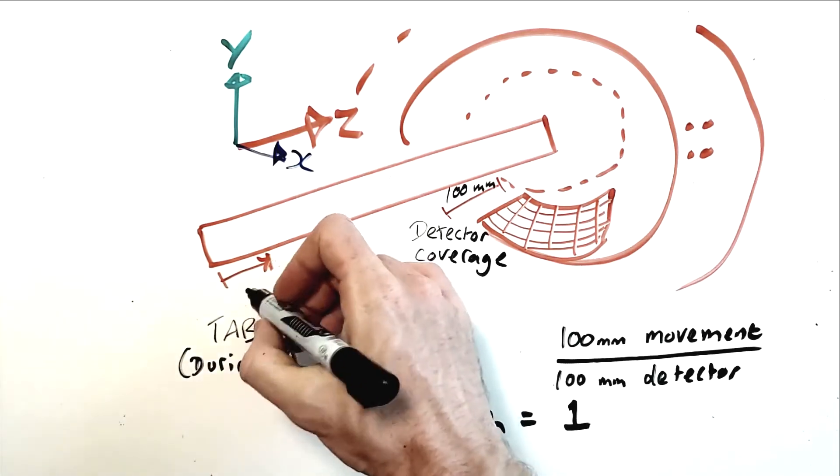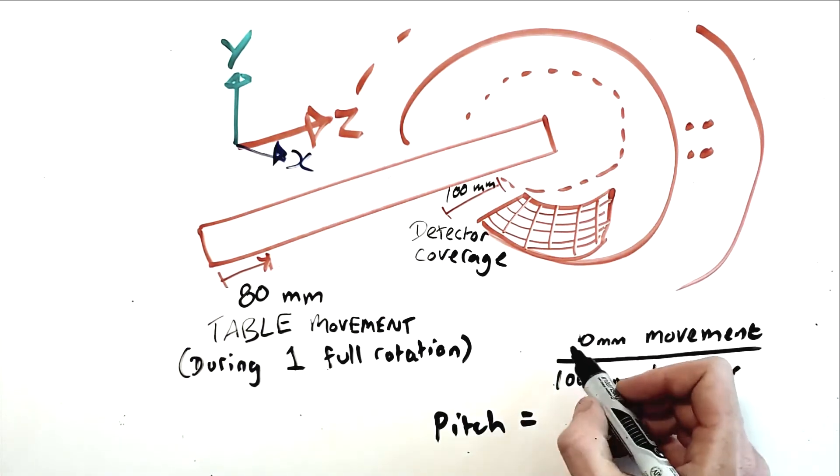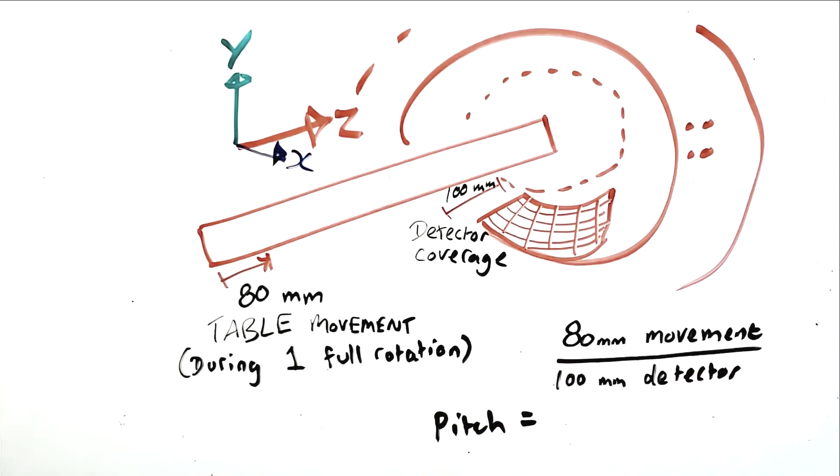For example, if the table only moves 80mm in one rotation, and the detector covers 100mm of length in the z-axis, your pitch factor would be 0.8, because the table is moving slower relative to the rate of data acquisition in the z-axis.